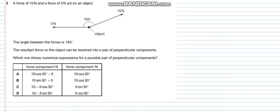Question number 3 says a force of 10 newtons and a force of 5 newtons act on an object. The angle between the forces is 150 degrees. The resulting force on the object can resolve into a pair of perpendicular components. Which row shows the numerical expression for the possible pair of perpendicular components. Let's start by resolving this. So this is 150 degrees, so this would be 30 degrees. This would make up 10 cos 30 and this would make up 10 sin 30. So solving it horizontally we get 10 cos 30 minus 5 and vertically would give us 10 sin 30.